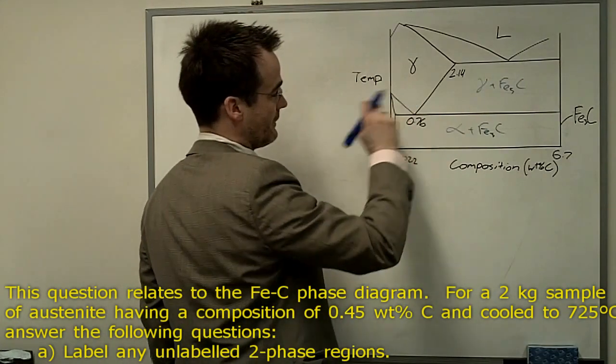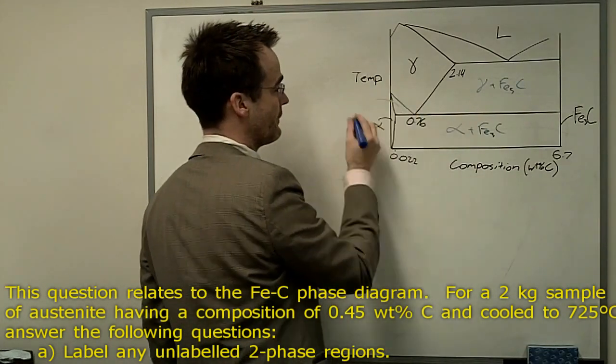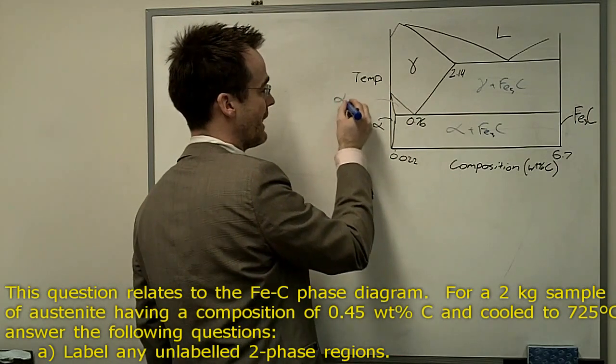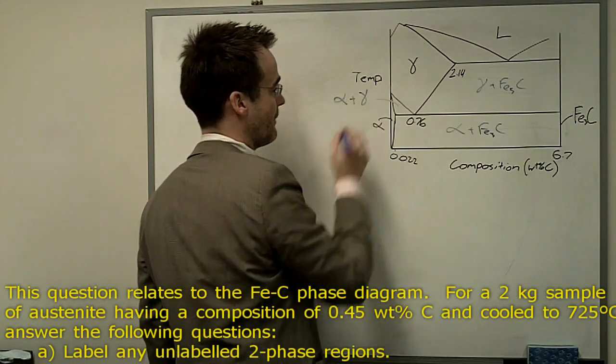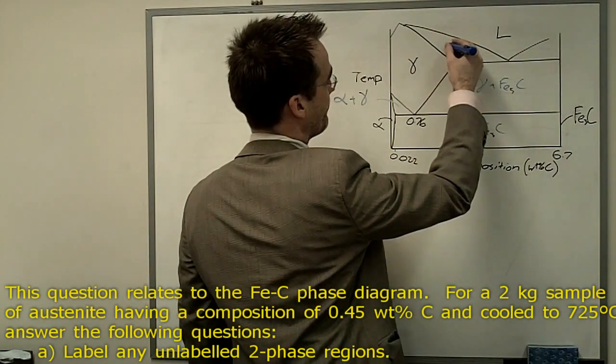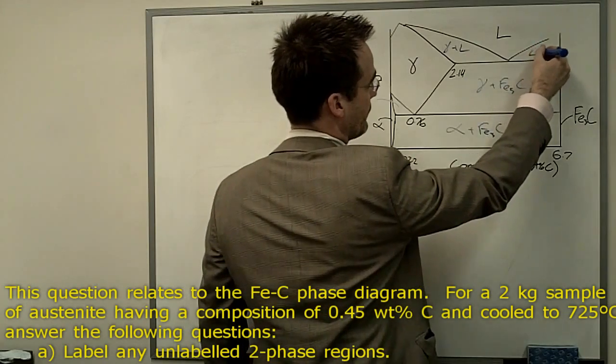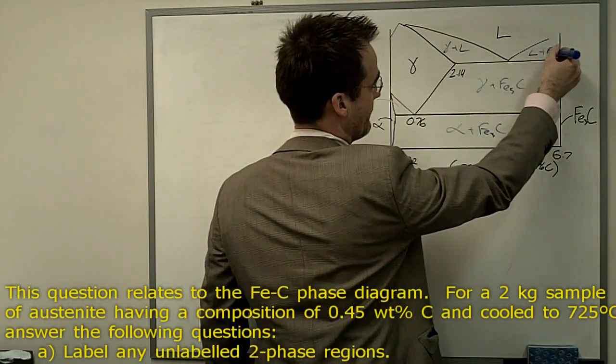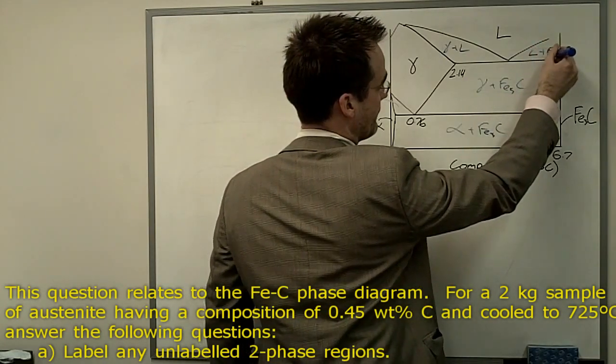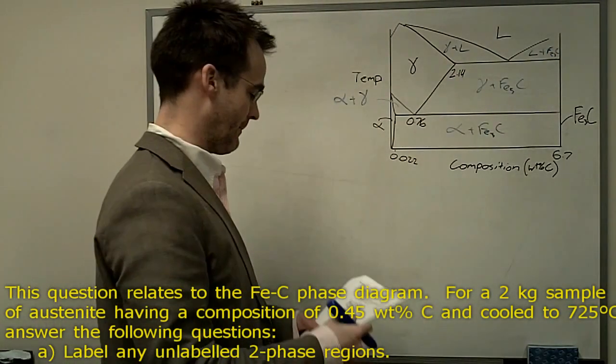This here, the tie line would tell us alpha on the left, gamma on the right. So that region there is the two-phase alpha plus gamma. And then we've got over here gamma plus liquid and liquid plus Fe3C. And I'm not going to bother with the delta phase up at the top.